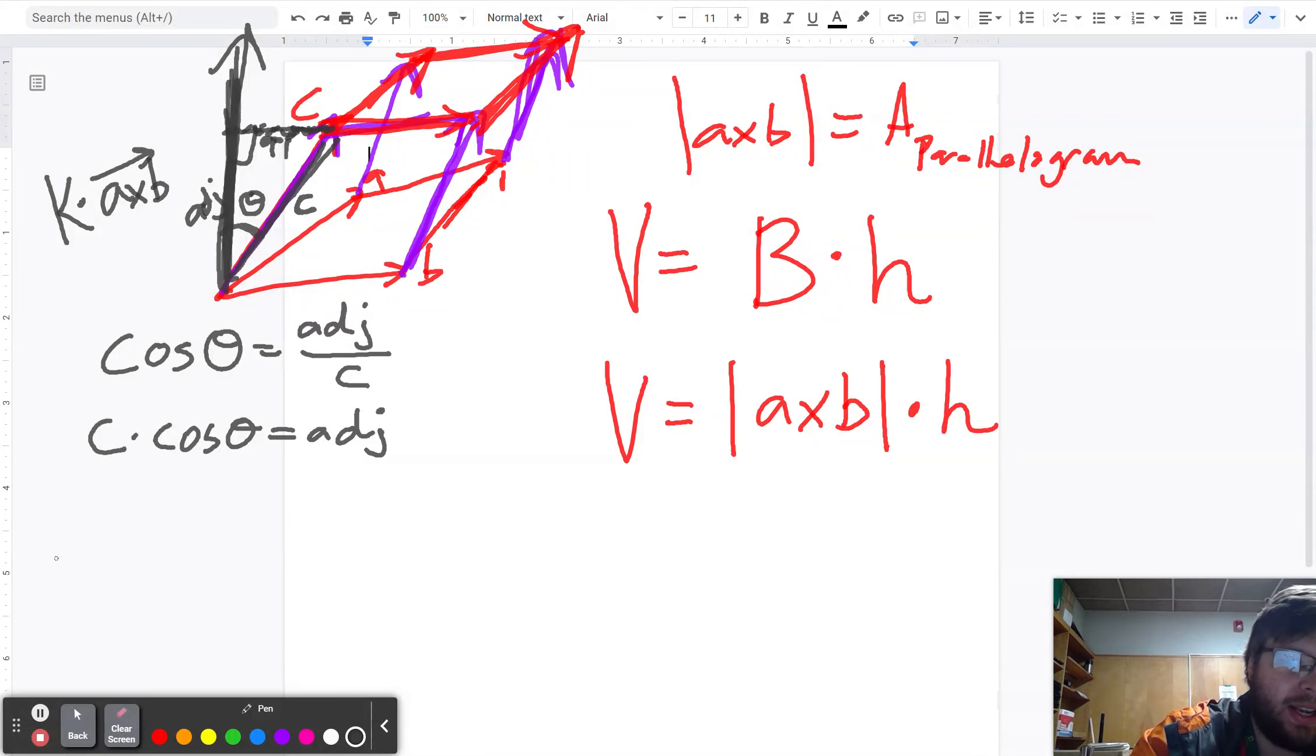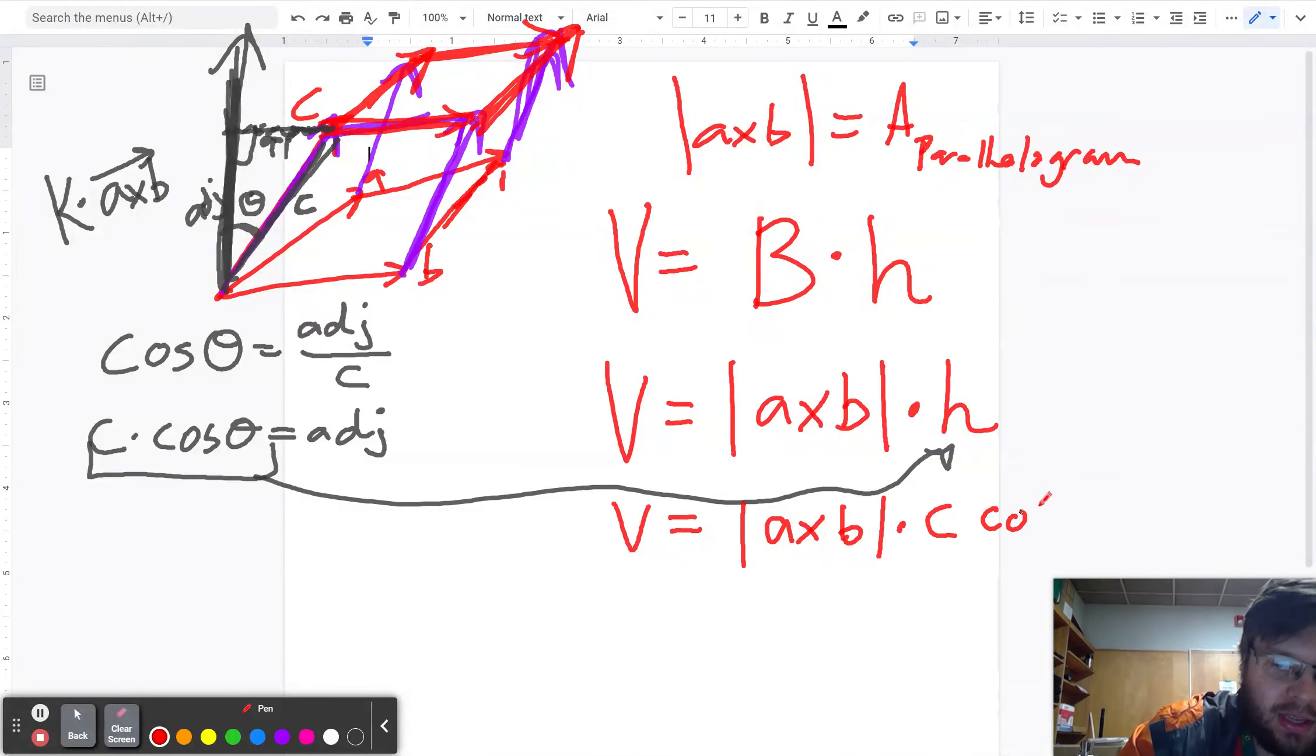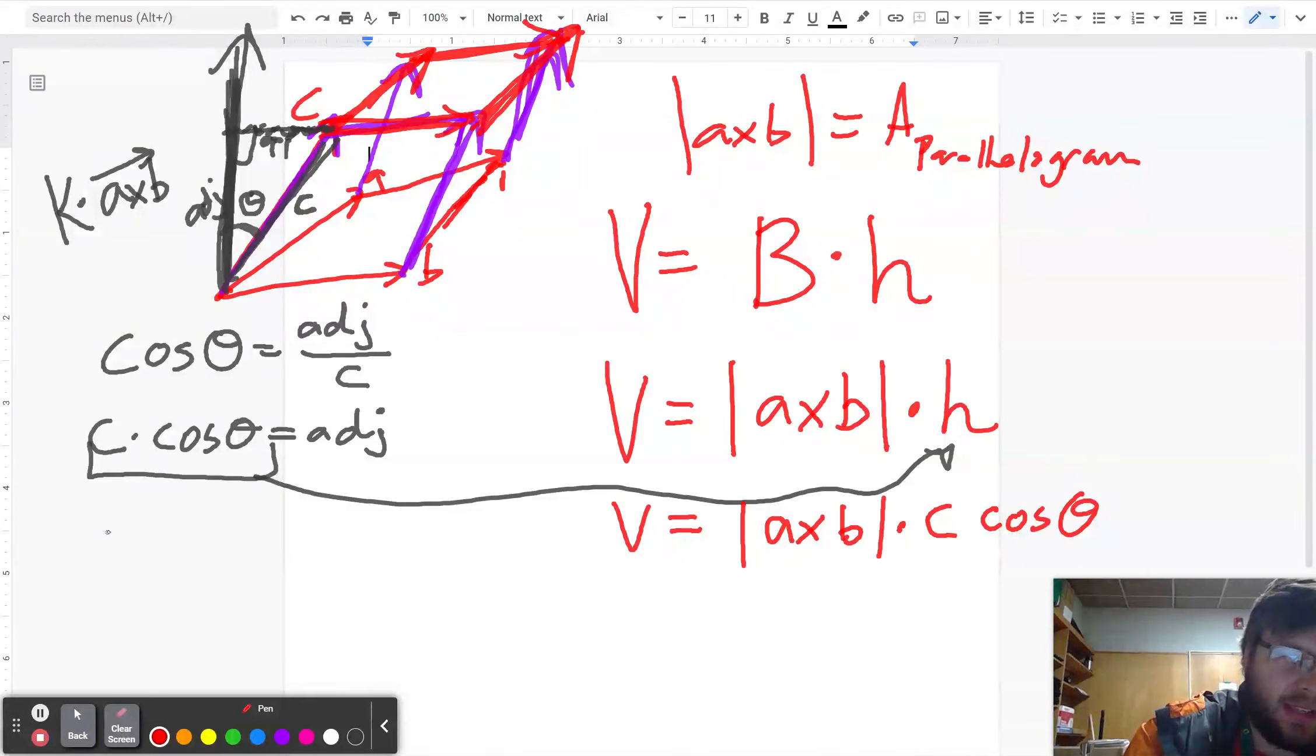Now, what I can do is stick this part in right there. So the volume V is equal to A cross B dotted with C cosine theta. Now, I think we can do a little bit better than that. Because I also remember using the dot product to find the angle between two things. And I remember that we had this definition that for any two vectors, I'm not going to use A. For any two vectors, V dot W,